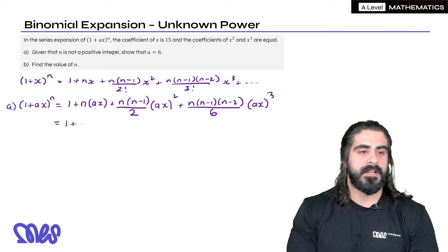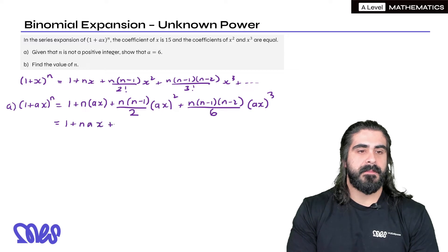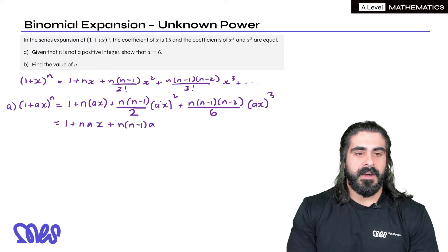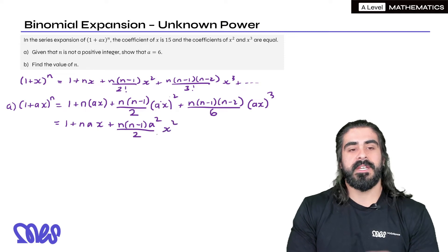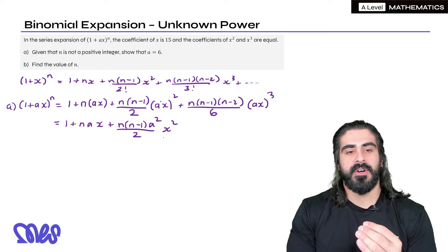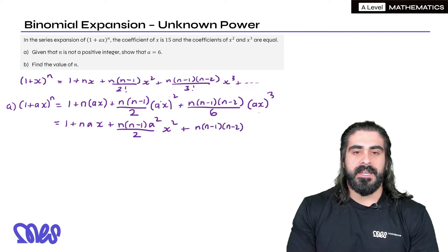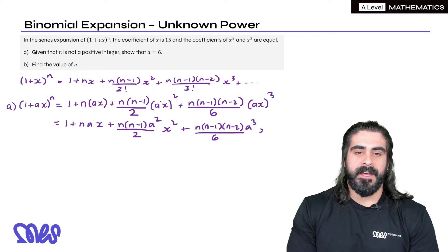So we have 1 plus nax plus n(n minus 1). Now here you have a squared x squared. I'm going to write a squared as part of this fraction and then x squared because then we can explicitly see what the coefficients are of each term. Then here we have n(n minus 1)(n minus 2) a cubed over 6 x cubed.